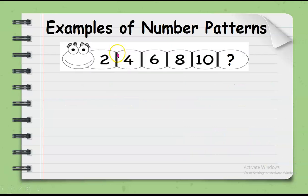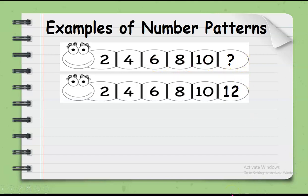Examples are, of course, we have here 2, 4, 6, 8, 10. Then what is the missing number? Yes, the missing number is 12 because we follow the skip counting by 2 pattern.